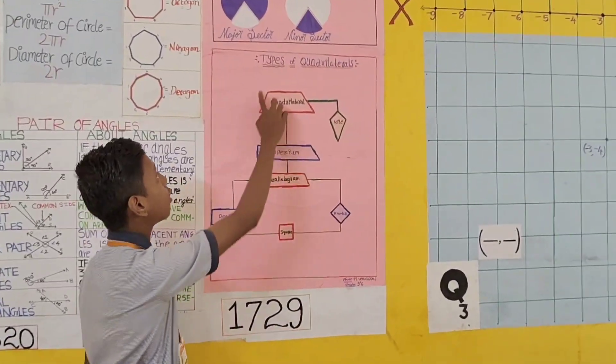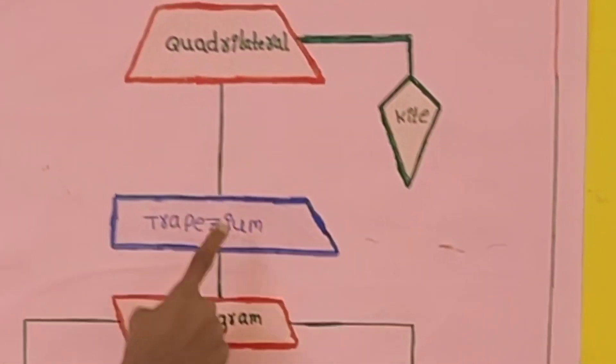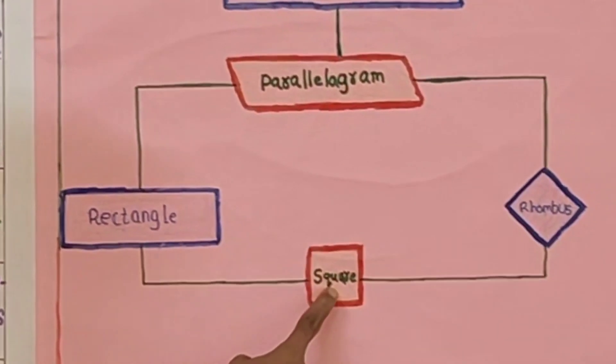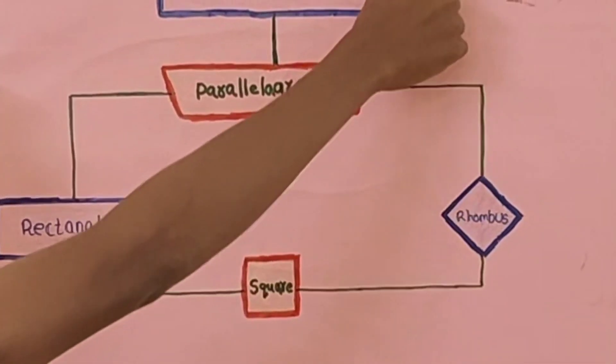Types of quadrilaterals. This is a quadrilateral. This is a trapezium. This is a parallelogram. This is a rectangle. This is a square. This is a rhombus. And this is a kite.